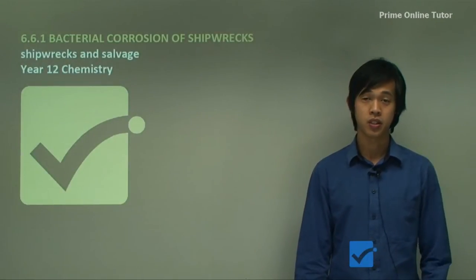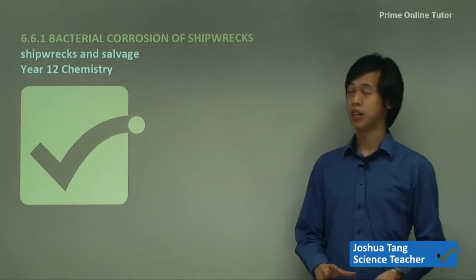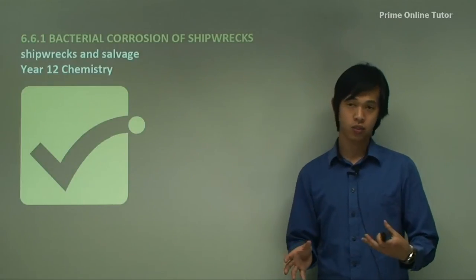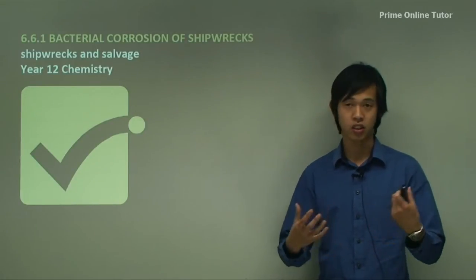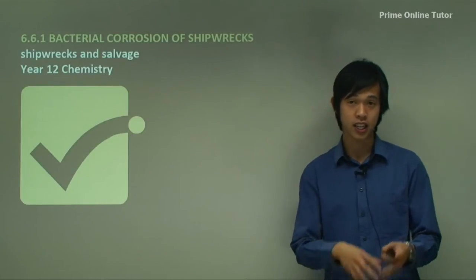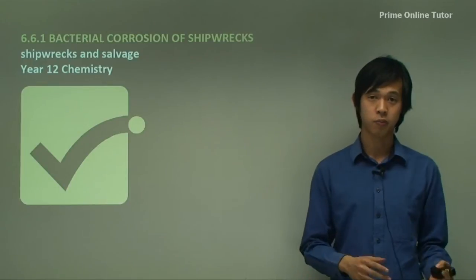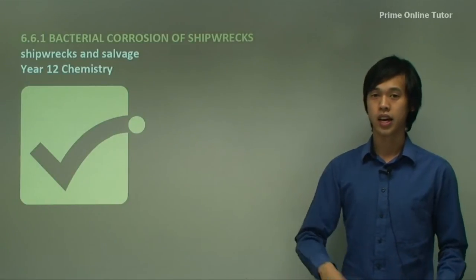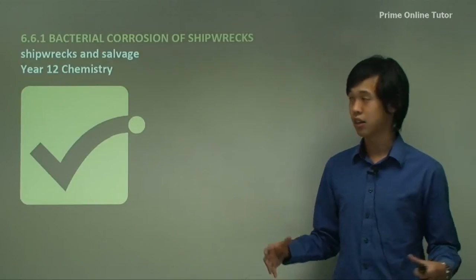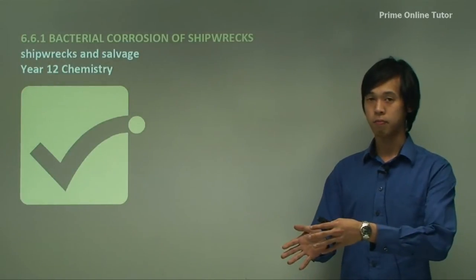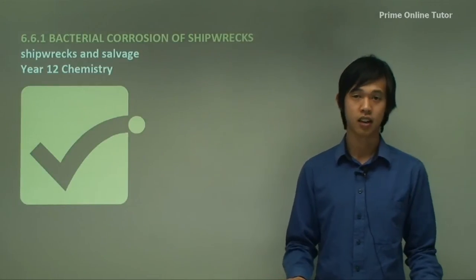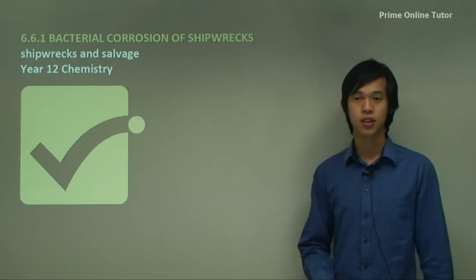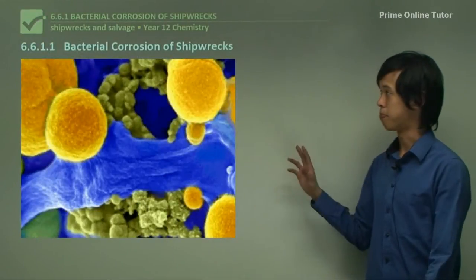Hello everyone, welcome again. Today's lesson is on the shipwrecks and salvage option in the HSC chemistry syllabus. In the last series, we looked at what we predict with deep sea corrosion, and with the low temperatures and low oxygen content at the bottom of the ocean, corrosion should be very low. So now we're going to look at another branch of corrosion, which is bacterial corrosion. Today's lesson will focus on bacterial corrosion of shipwrecks.